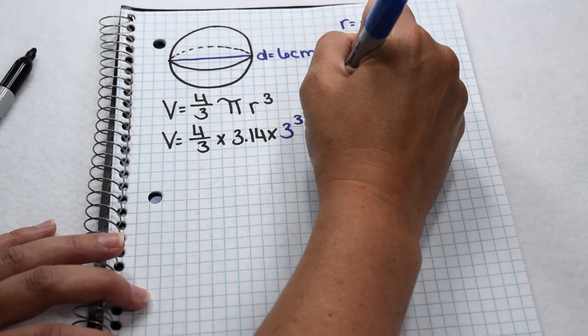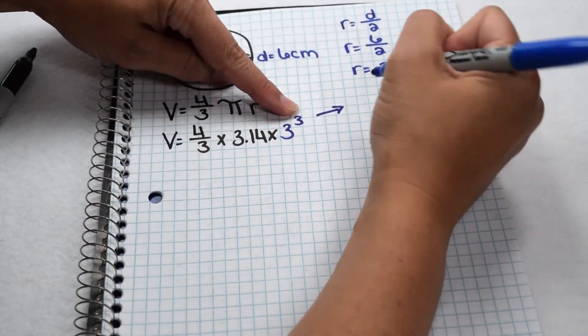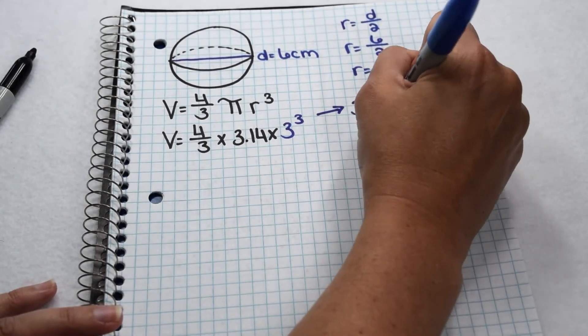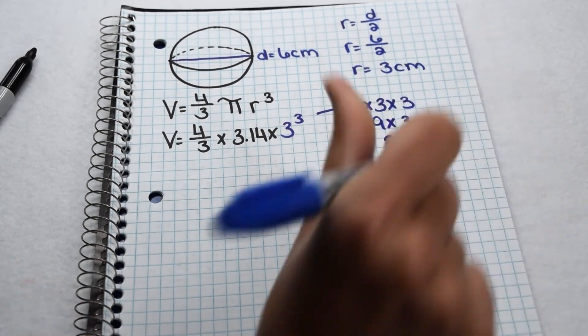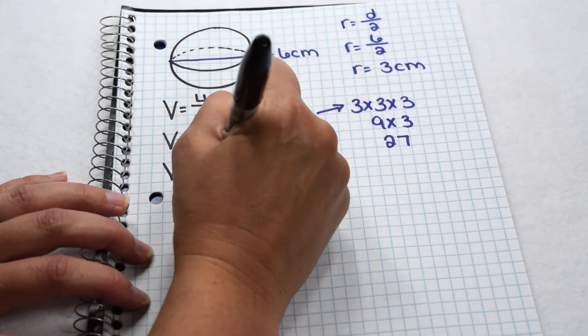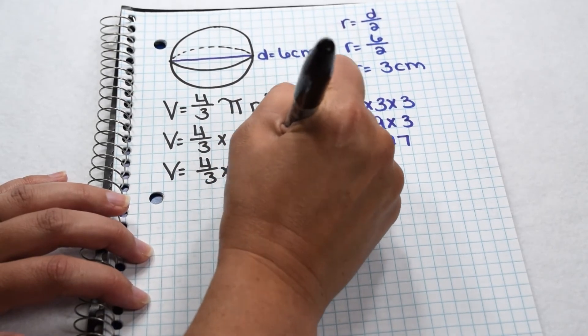Let's take a moment to remember what exponents means. To the third power means we need to multiply the number by itself that many times. So we would have three threes. Three times three is nine. Nine times three is 27. So at this point our equation is going to say four-thirds times 3.14 times 27.